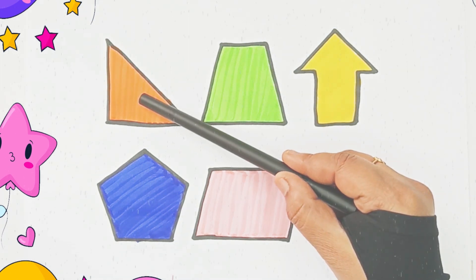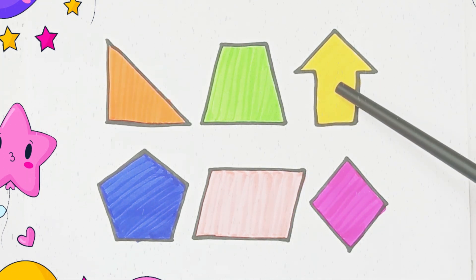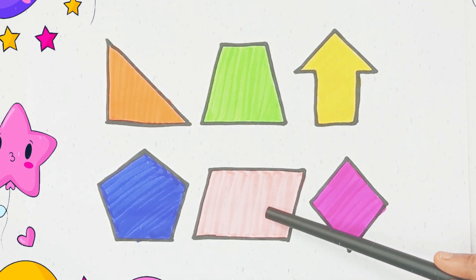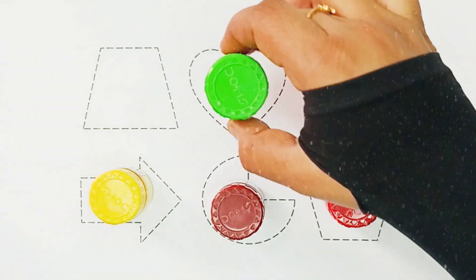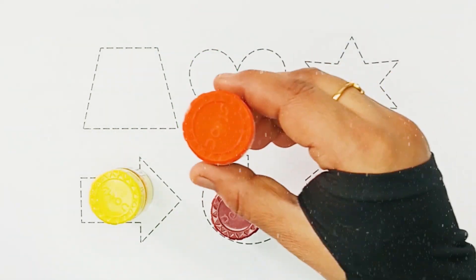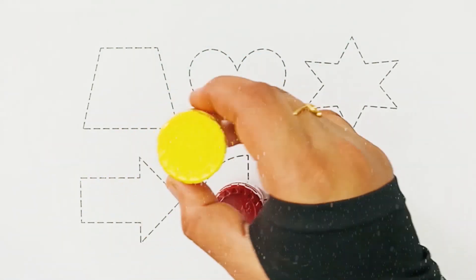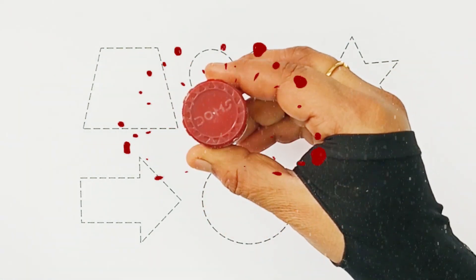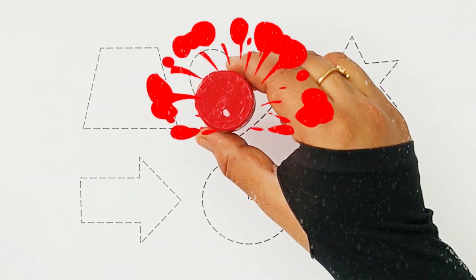Right triangle, trapezoid, arrow, pentagon, parallelogram, mule color, green color, orange color. Yellow color. Brown color. Red color.